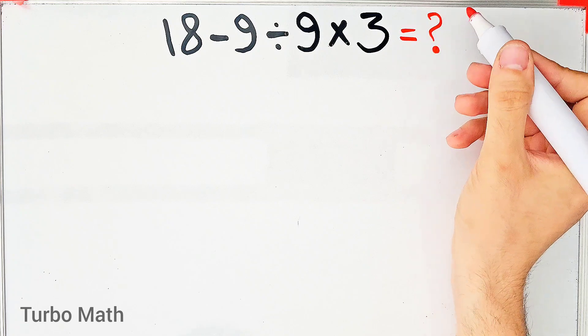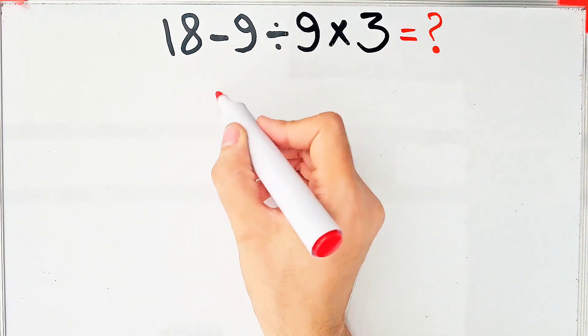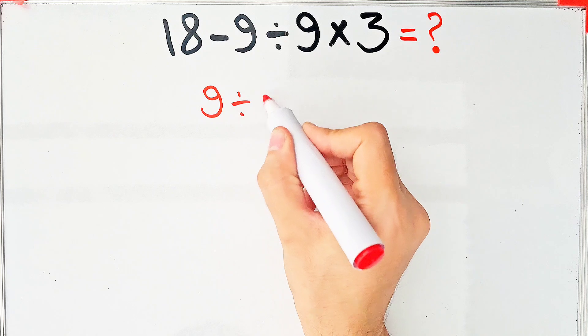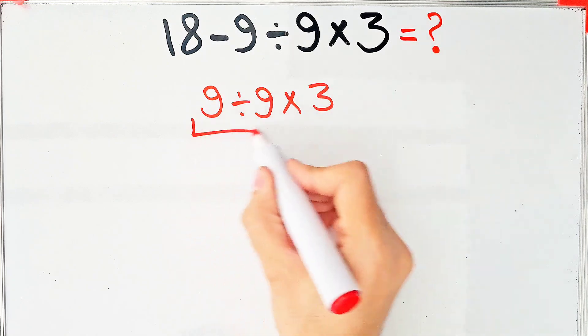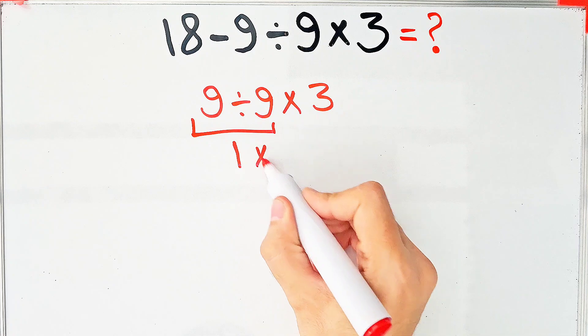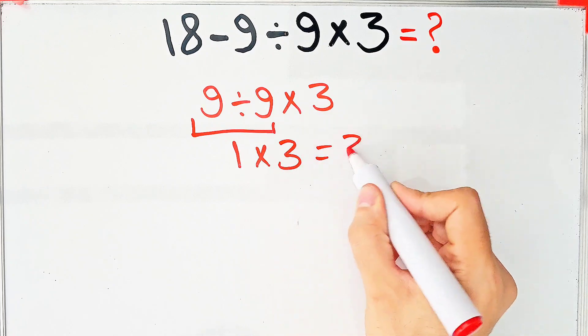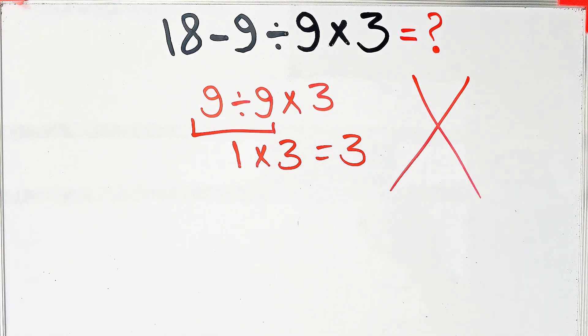In the wrong way of solving this question, some people solve it like this: 18 minus 9 equals 9. 9 divided by 9 then times 3. 9 divided by 9 equals 1 and 1 times 3 equals 3. But this answer is definitely wrong.